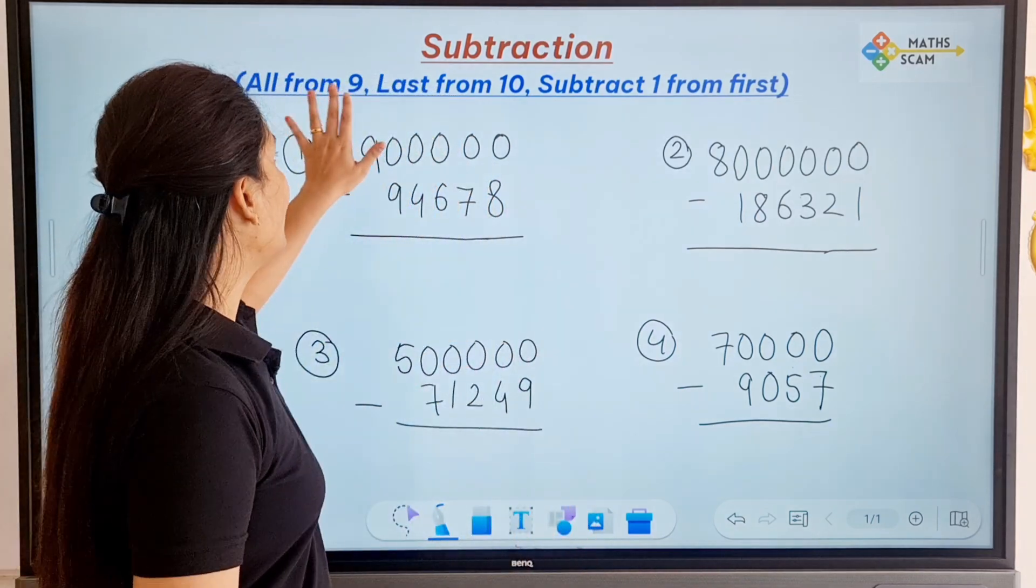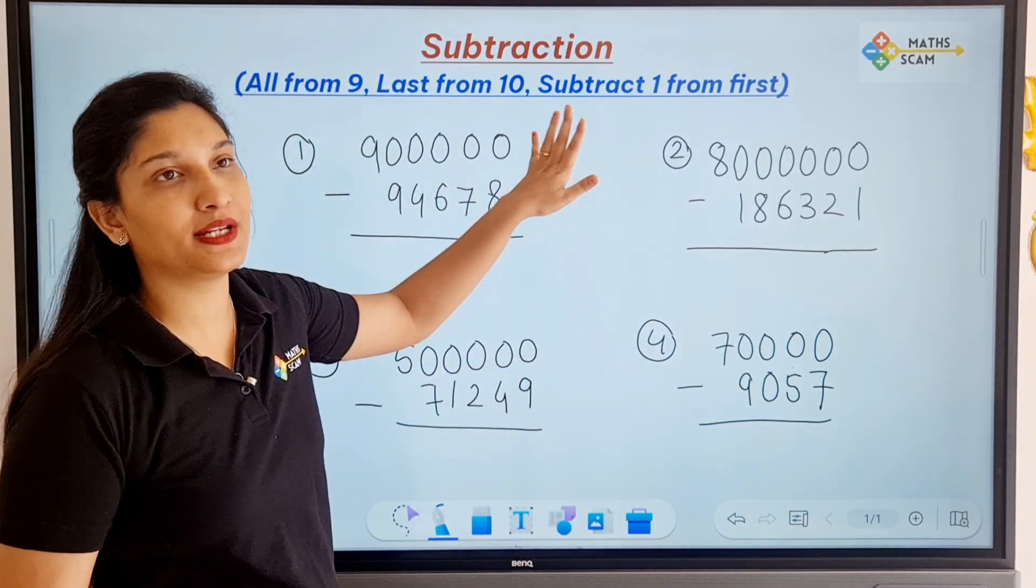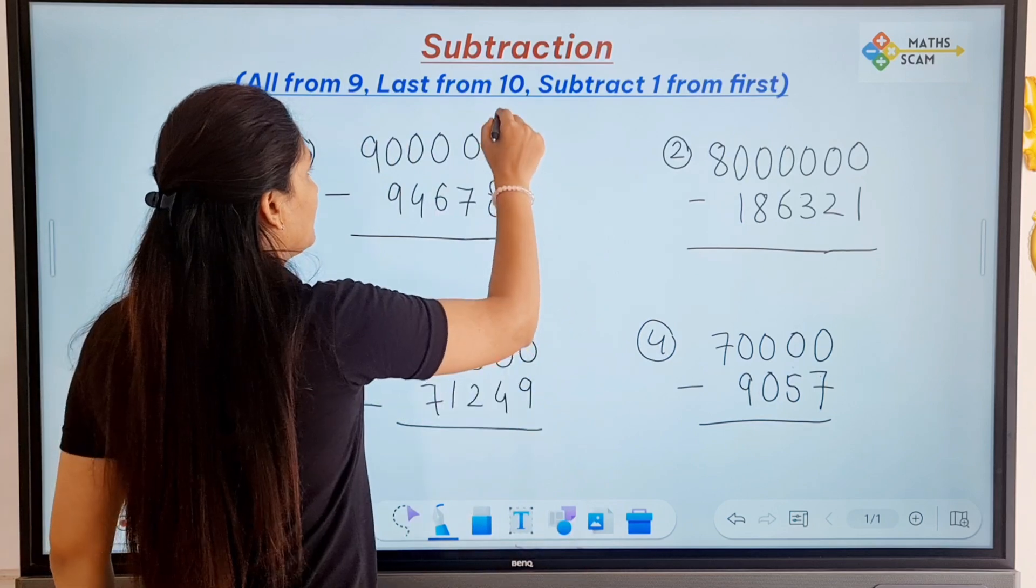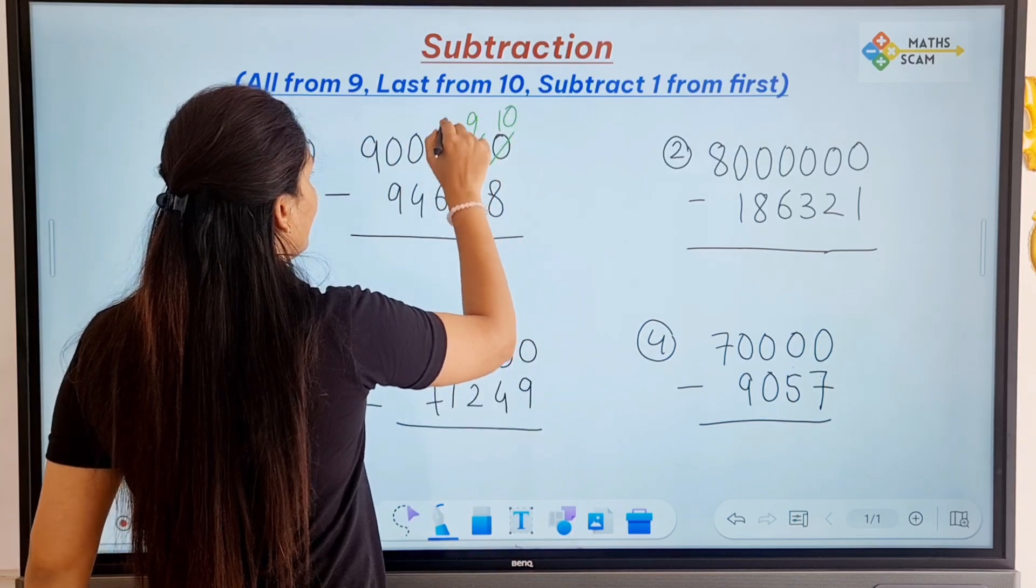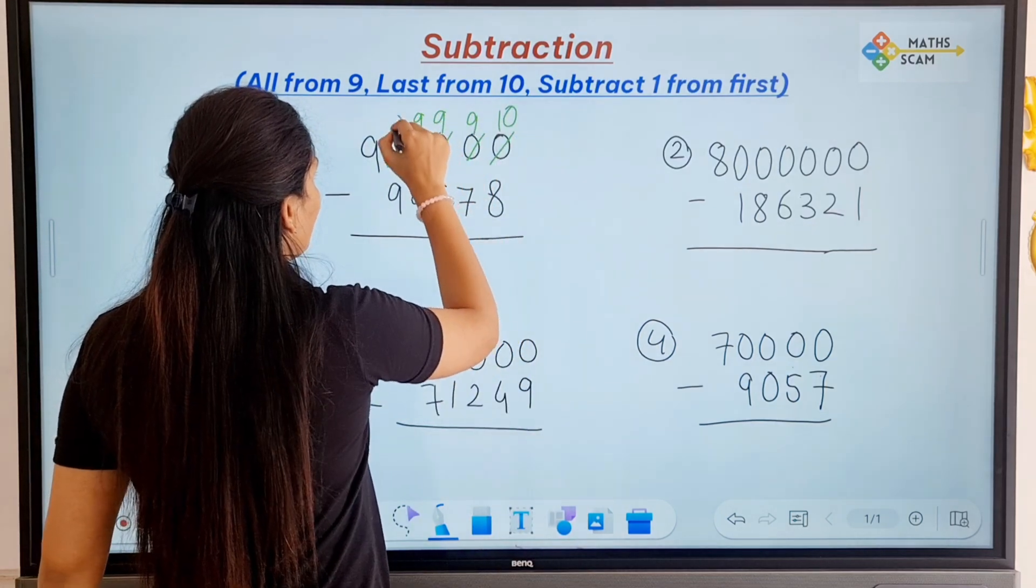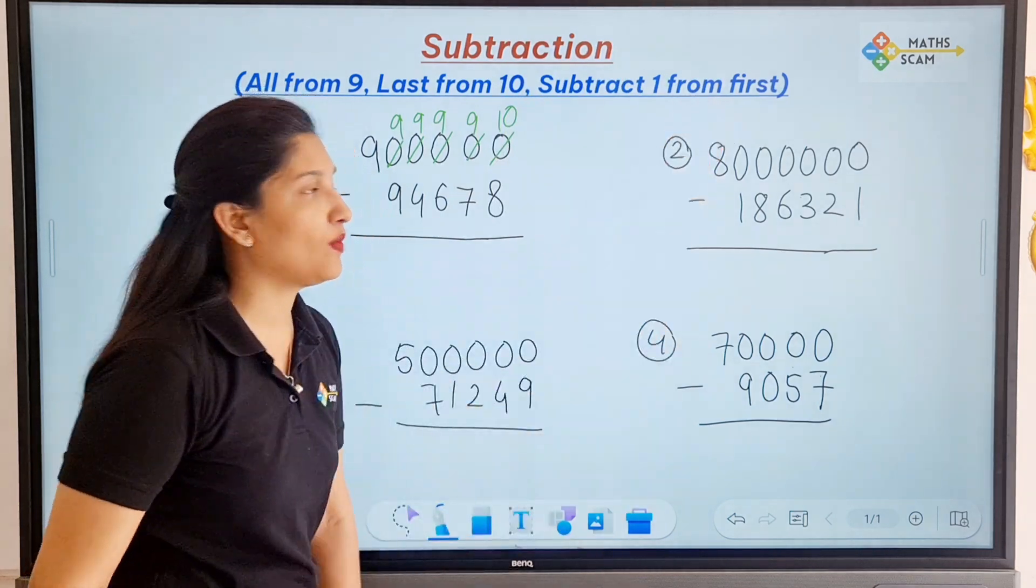Now what you have to do is all from 9, the same, last from 10, same. So the last is going to be 10, others are from 9, and the next thing is subtract 1 from first.